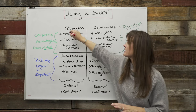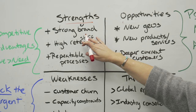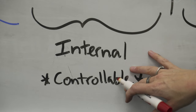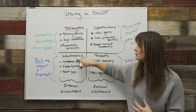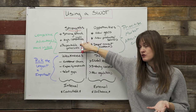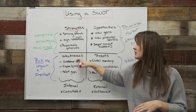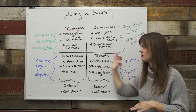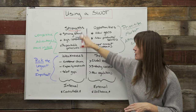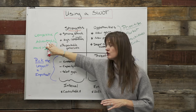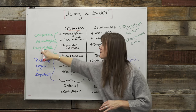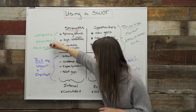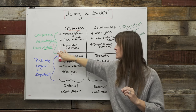So for our strengths — a couple of examples: strong brand, high staff retention, repeatable processes. Remember, strengths and weaknesses are internal and they're controllable. Meaning if you want to bump up your strengths, you can — you have control to do so, resources notwithstanding. Same thing with weaknesses: you can solve these things if you choose to. Strengths are really good sources for competitive advantages. Some may actually be current competitive advantages; others might be those you need to develop, in which case those are great candidates for initiatives.